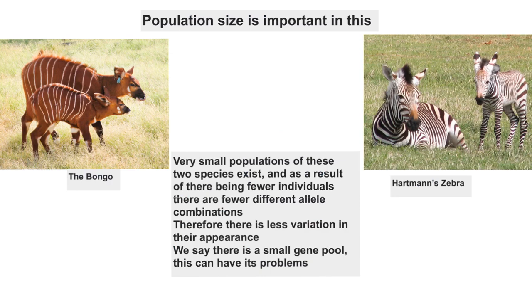One of the key things in all this is the size of the population. If you've got a small population, there will be fewer alleles and fewer different allele combinations possible, and this often shows up in the appearance of that population. Here we've got two individuals — the bongo — they look remarkably similar to each other. Here we've got another example, the Hartmann's zebra, and again they look remarkably similar. They have a very small gene pool, and this can have its problems.